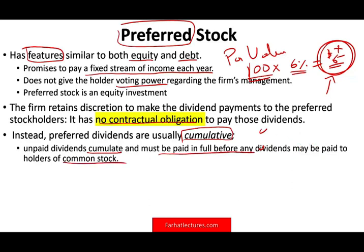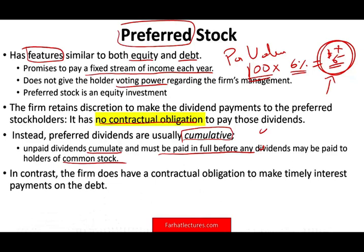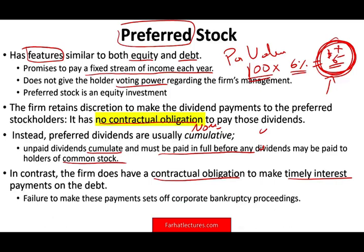You are standing in line before the common shareholders — that's where the preference is. If the preferred is non-cumulative, you don't have this right. We said it's a fixed payment, but they don't have to pay you — it's not a contractual obligation to make timely payments like a bond. If you don't make interest payments on a bond, the lenders will take you to court and put you out of business. Failure to make payments on your bonds will put you into bankruptcy, but failure to make payments on your preferred stock carries no such obligation. If it's cumulative, they will come back and pay you eventually, but you cannot sue them or force them to pay unless the company makes a profit.